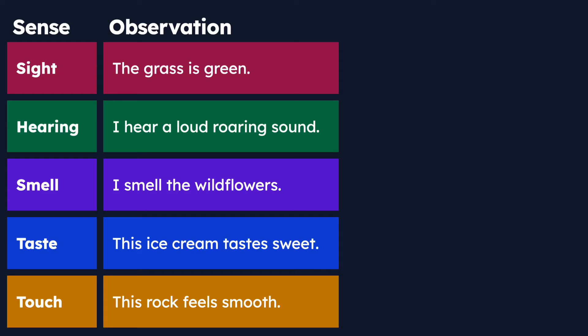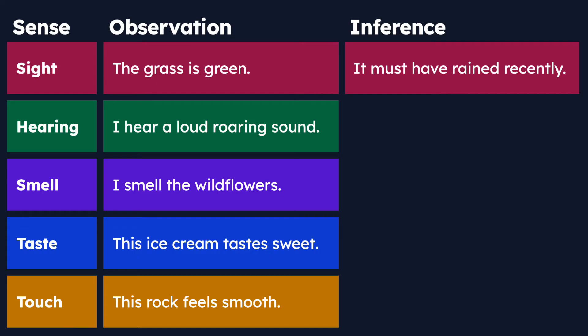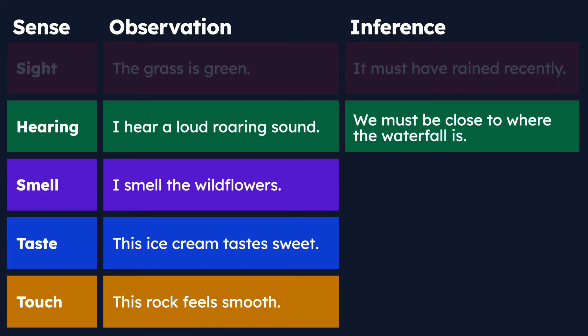If we revisit our table, we'll add a column listing inferences based on those sample observations. For sight, we observe that the grass is green, and we might infer that it must have rained recently. We don't know that for sure, but based on past experience we know grass looks greener when it's well watered. For hearing, we heard a loud roaring sound, and we might infer that we are close to a waterfall. We don't see it, but based on our observations, it's a safe inference.